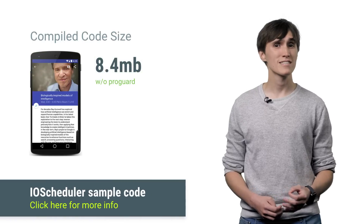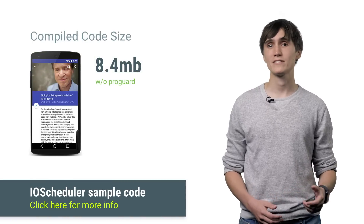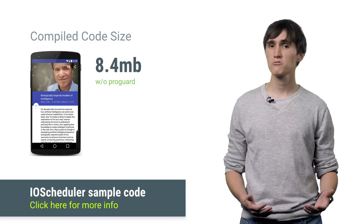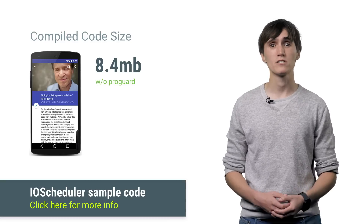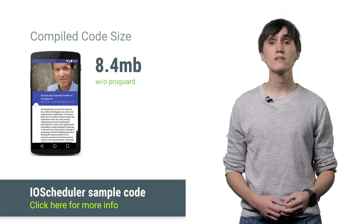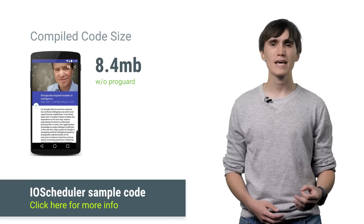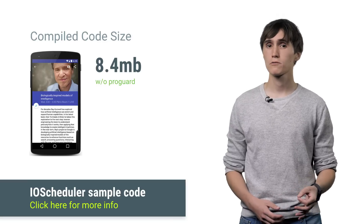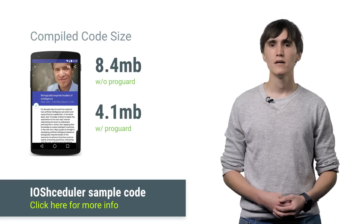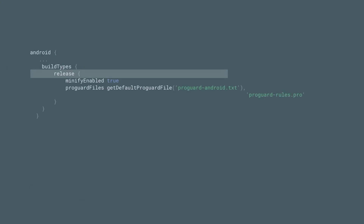ProGuard is a seriously sweet tool. Take a look at the Google I/O 2015 app — it's a great app with a lot of functionality that uses a lot of shared libraries. When doing a release build without ProGuard's code shrinking, you end up with about 8.4 megabytes of code. With ProGuard on, just 4.1. And this is especially awesome because of how easy it is to set up this code shrinking.